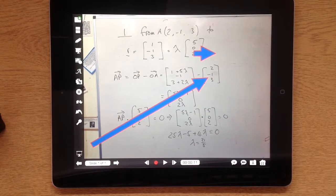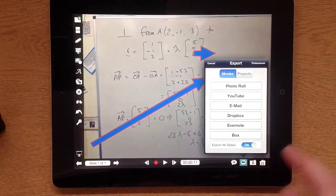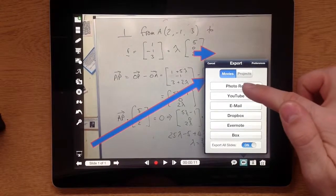It's a very simple process. All I'm going to do is use this icon at the bottom here and choose Photo Roll.